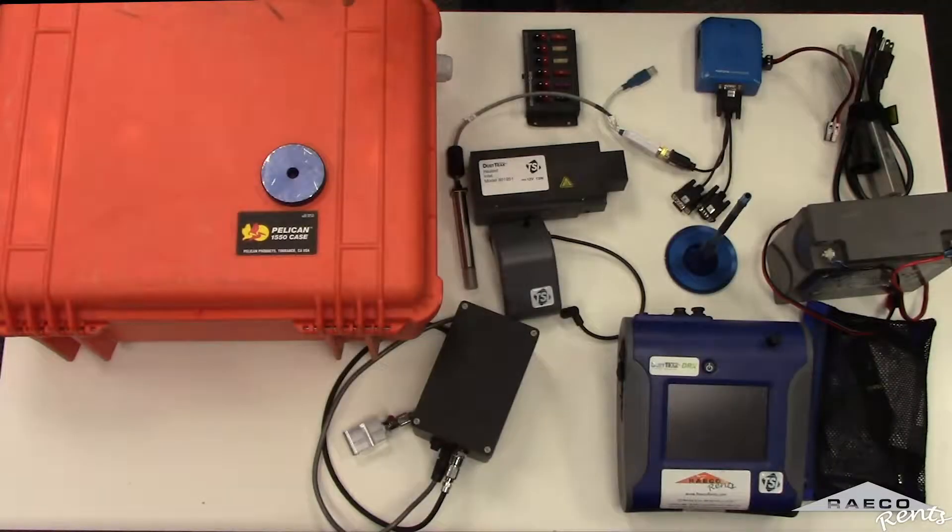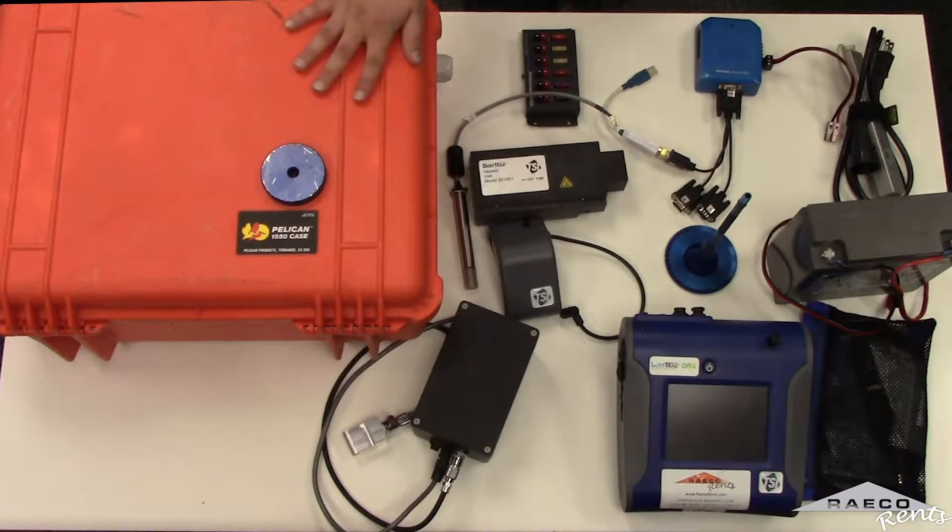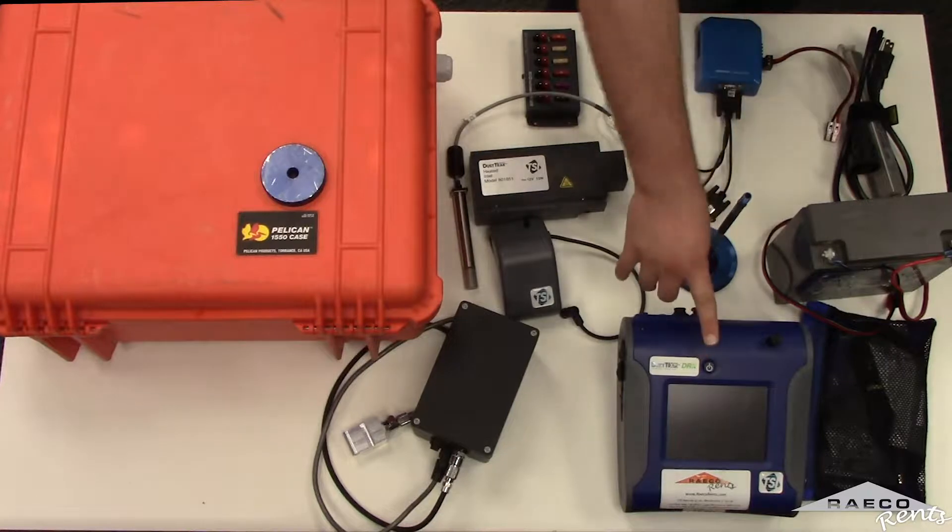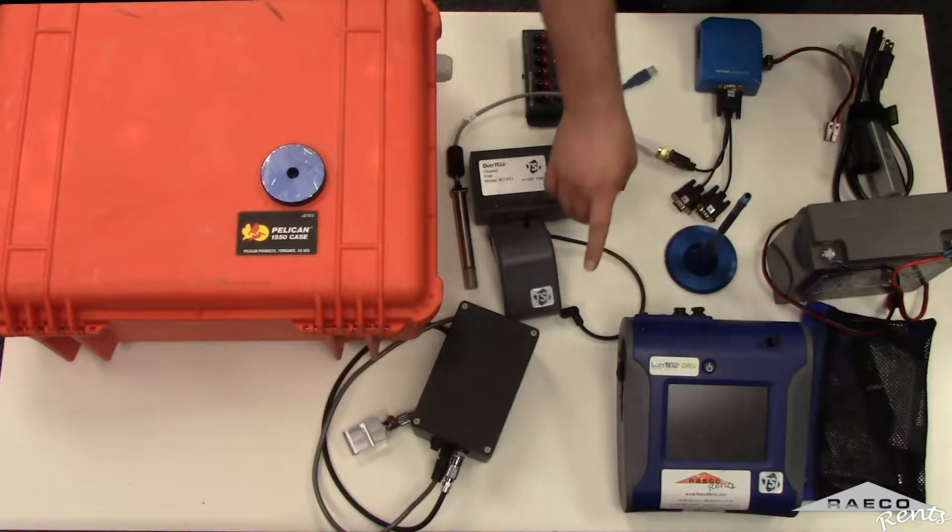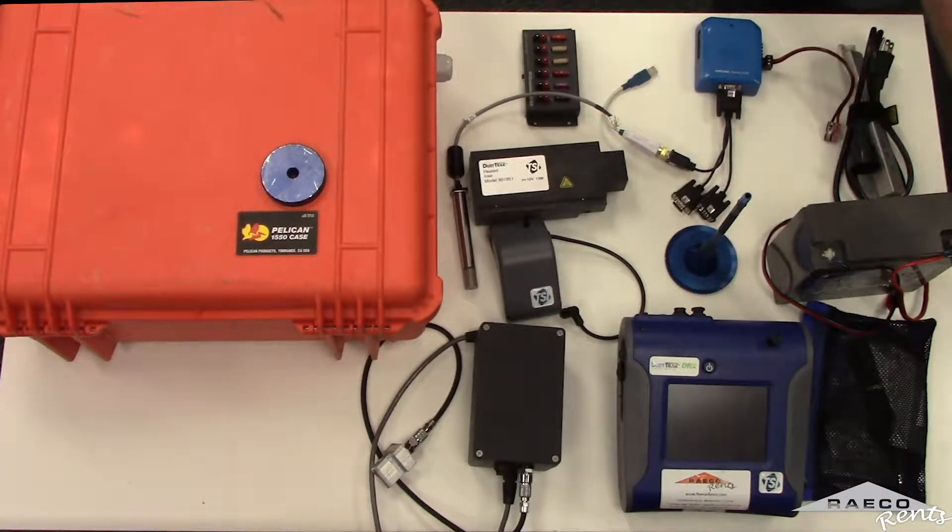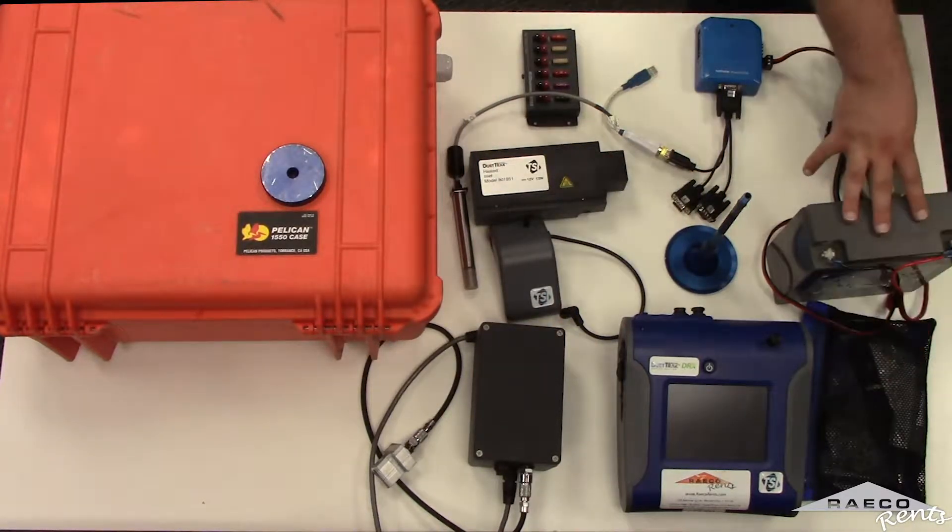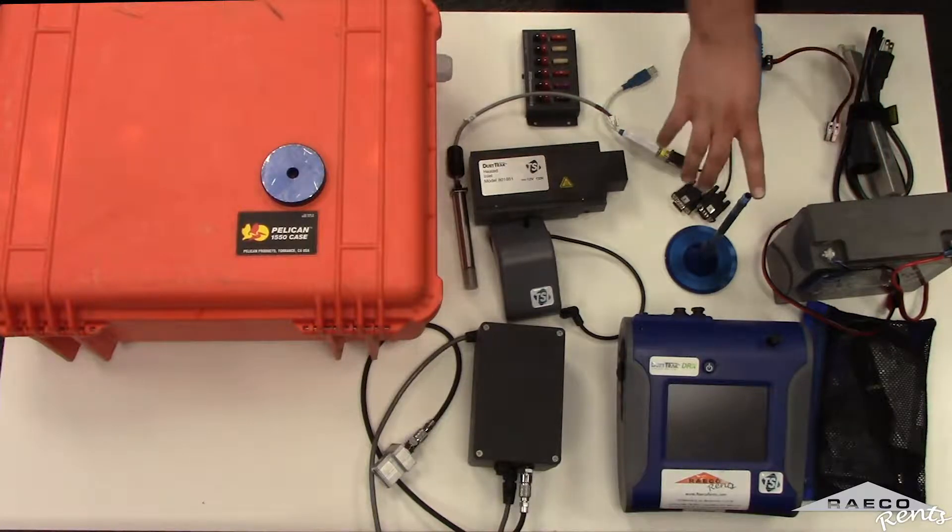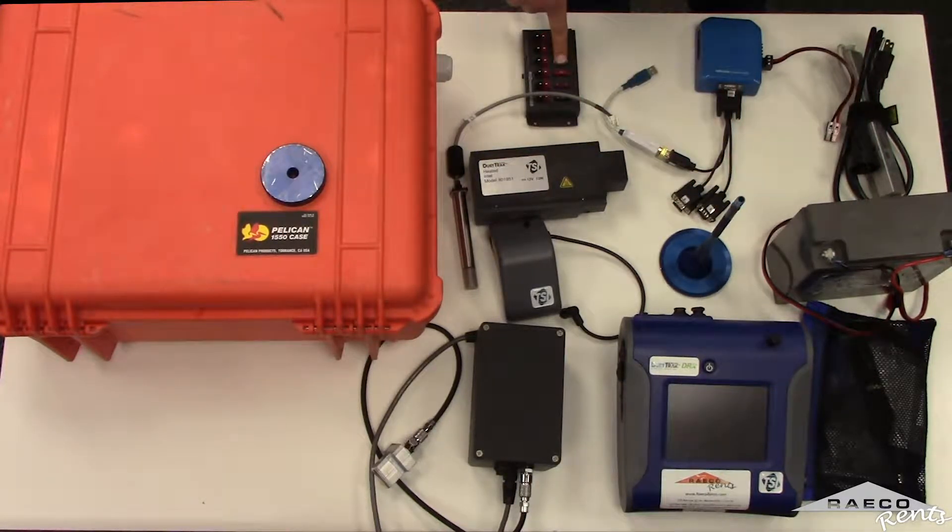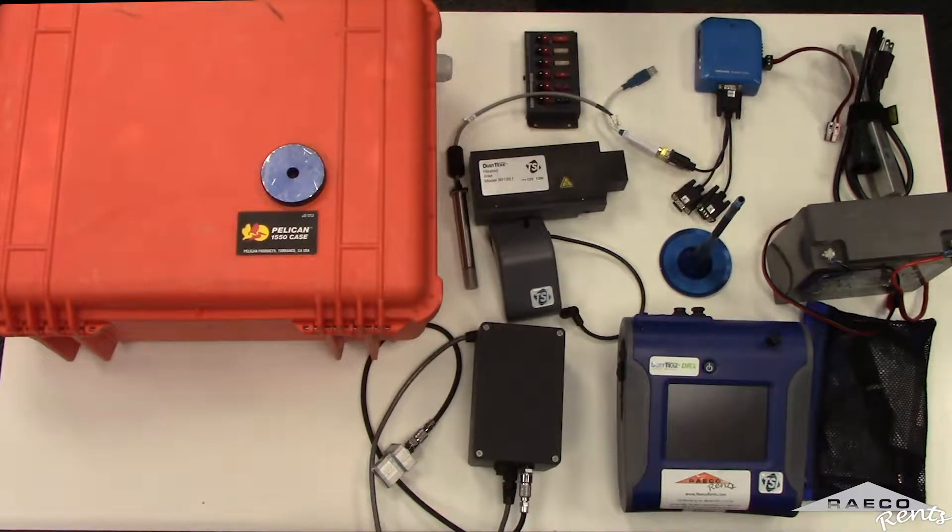So the first thing you're going to notice in any dust track enclosure is the pelican case itself. Then direct your attention to the dust track. Now depending on the dust track that you order, you may or may not have an external pump. I'll show you later on in the video how to connect these. Then dust track accessories, the 12 volt battery and an omnidirectional inlet along with a rig runner for power supplies. These are the basics that you'll find in any dust track enclosure.